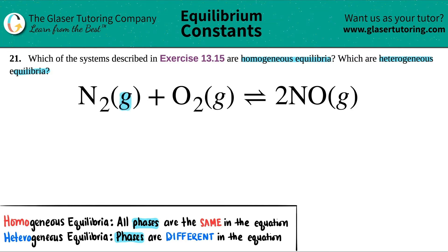Here, N2 is a gas, O2 is a gas, and NO is a gas. Since all of these phases are the same, I have gas, gas, and gas. This would be a